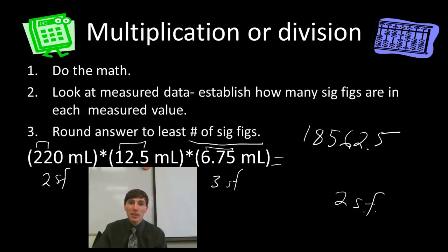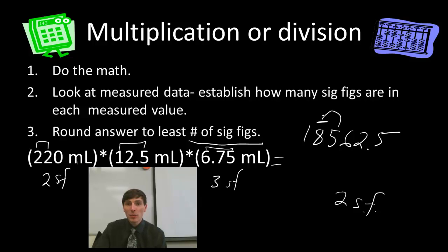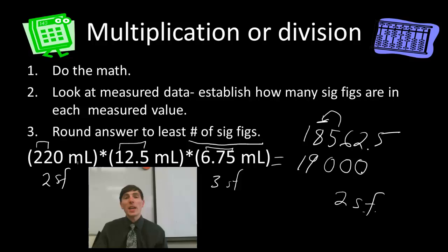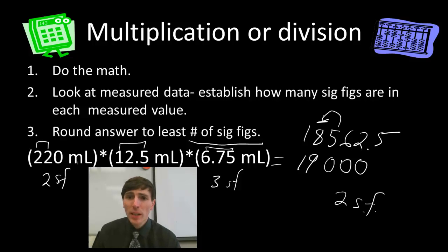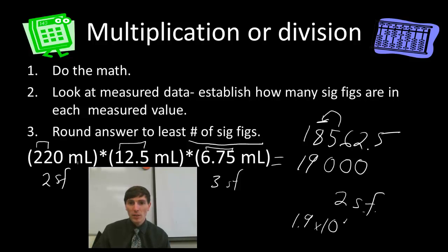There's no way with that imprecise instrument that I can know the answer has that much information. I look at my second sig fig, which is the 8. Because there's a 5 behind it, I round it up. So I round to 19,000, using zeros as placeholders with no decimal. If I wanted to, I could express this in scientific notation as 1.9 times 10 to the 4th. Remember, your calculator does not do sig figs, so don't just write what it says.